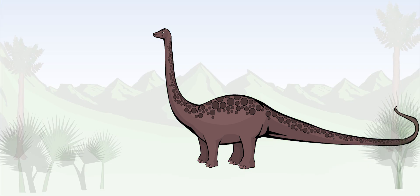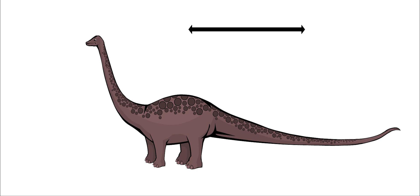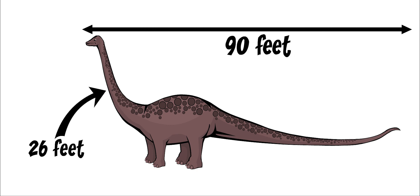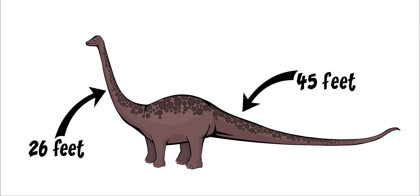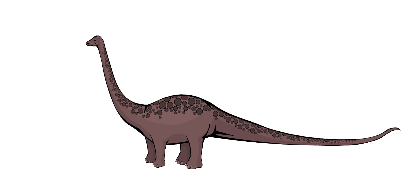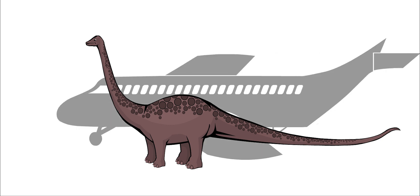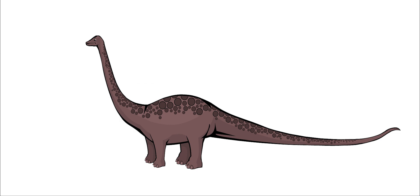Diplodocus grew to be about 90 feet long. It had a long 26-foot neck and a flexible 45-foot tail. That's about as large as an airplane. It was among the longest land animals that ever walked on the planet.